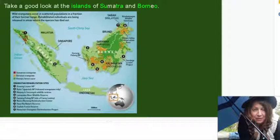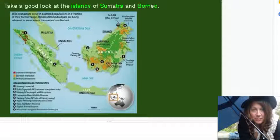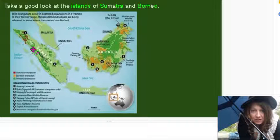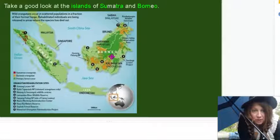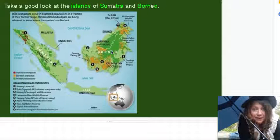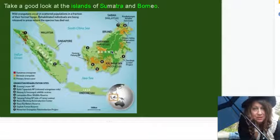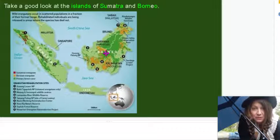On this slide, if we take a good look, we can see the islands of Sumatra and Borneo just a little bit more close up. And you can see by the green, there's not a lot of rainforest left in Sumatra, nor over here in Borneo. So our wild orangutans occur in these scattered populations — just a fraction of the former range and habitat that they used to live in.